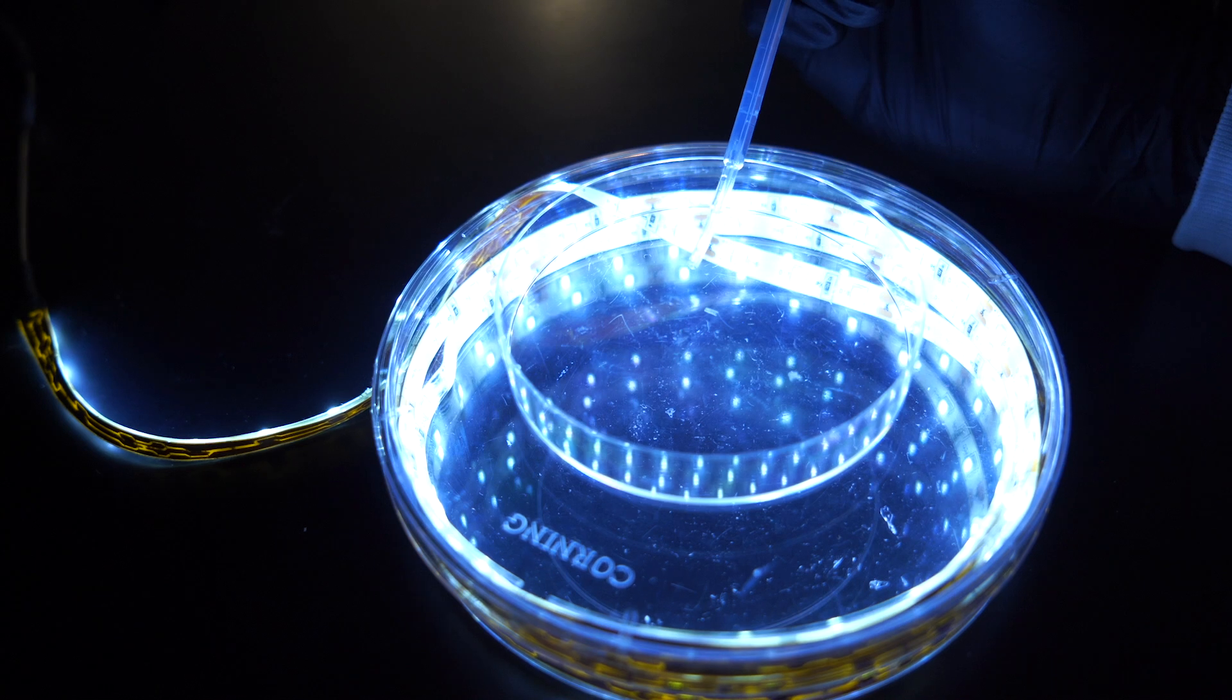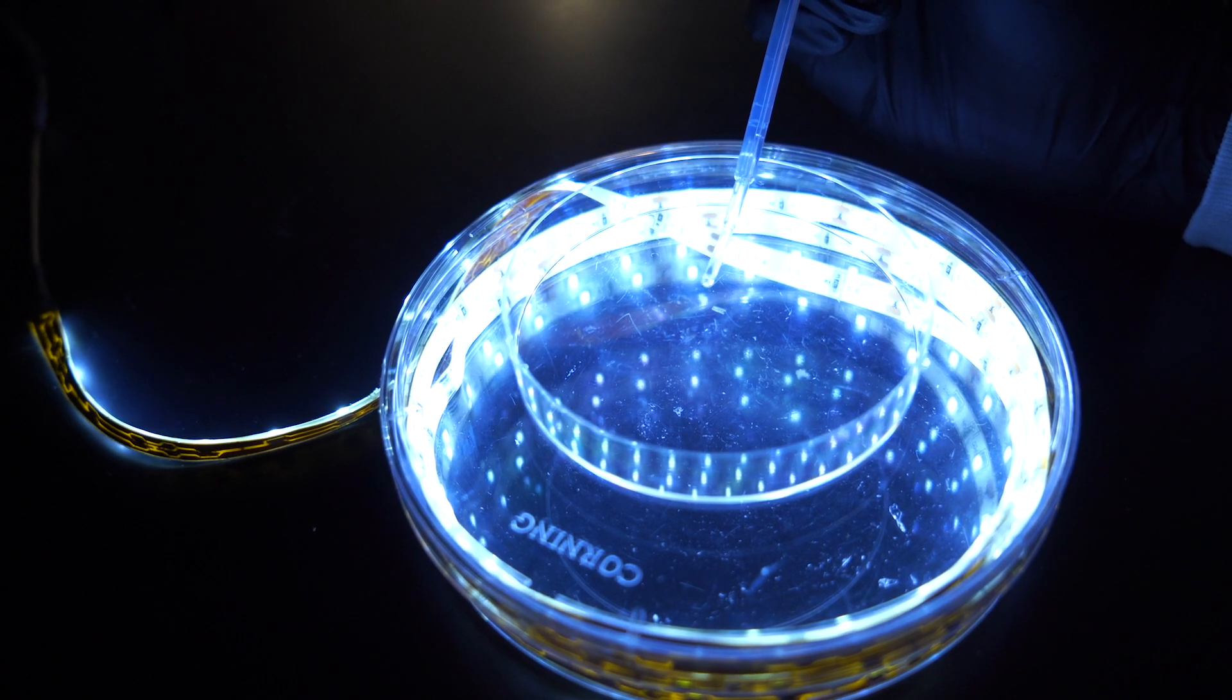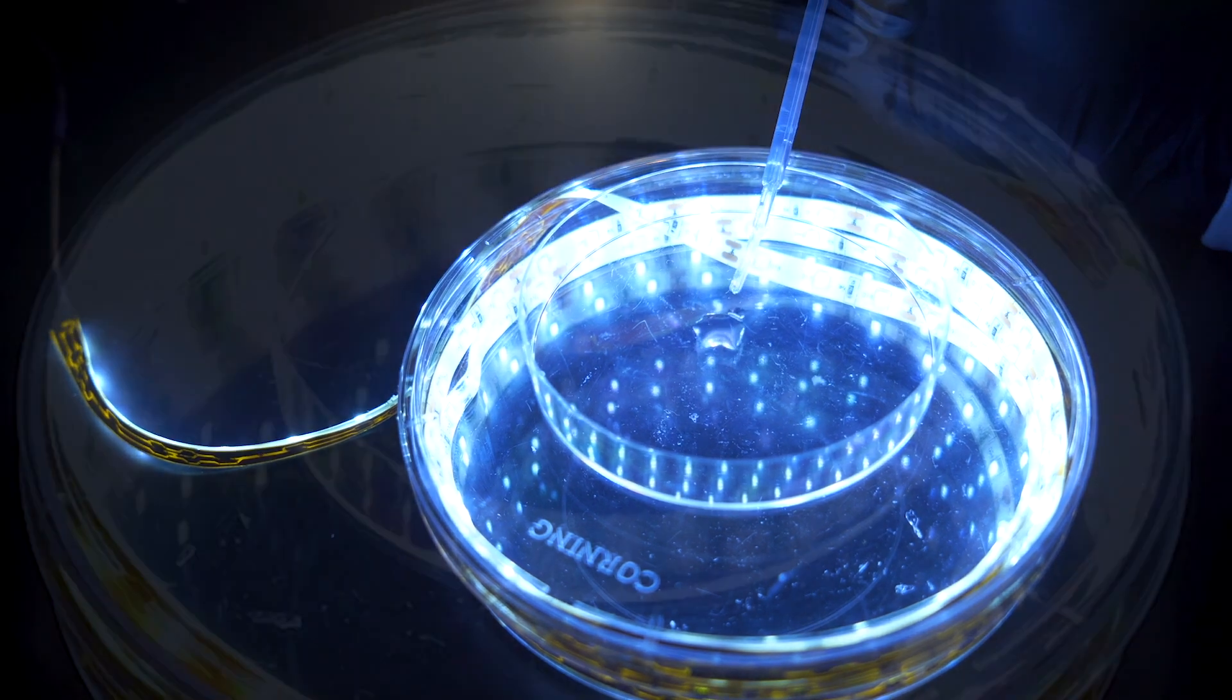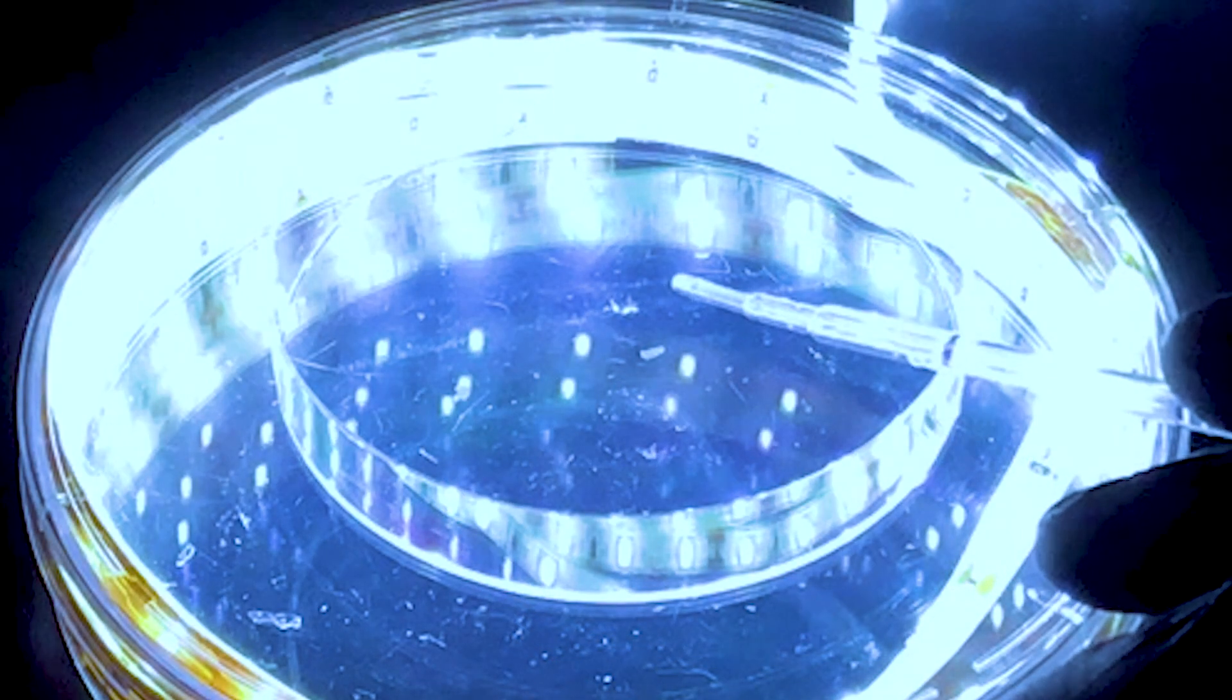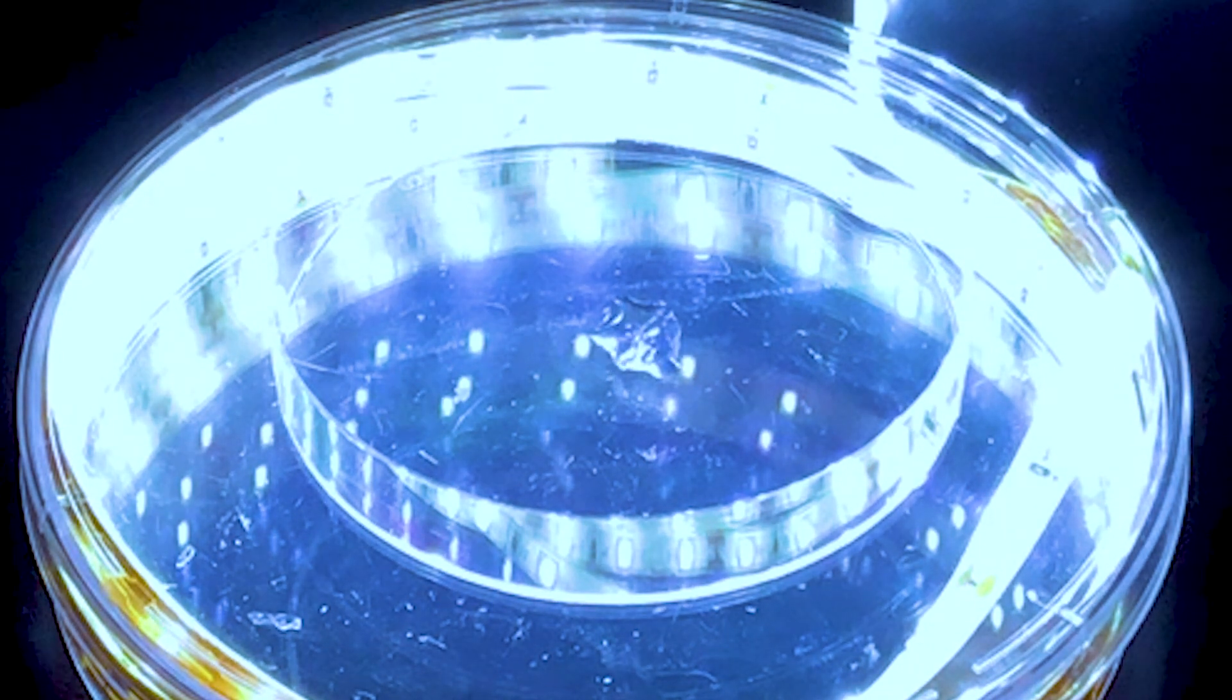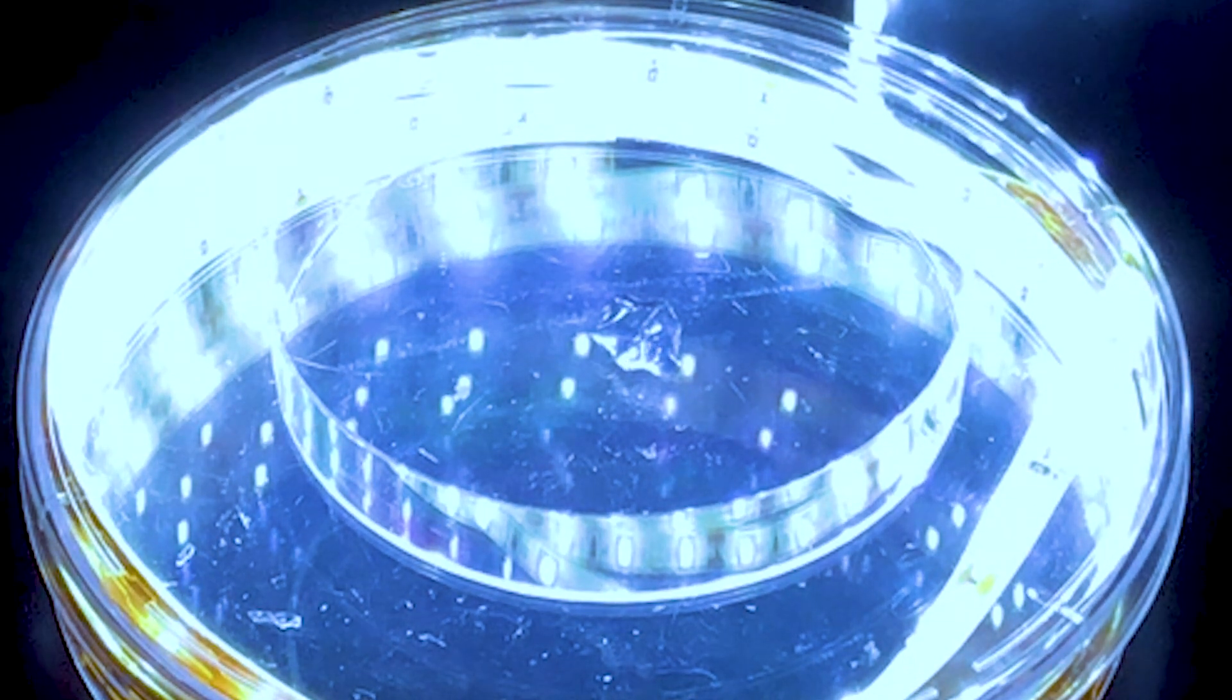Expansion microscopy is an emerging imaging technique that can allow you to see very fine details of biological specimens. Basically, you take the biological specimens and infuse it with some chemicals, just like baby diaper materials, and then you add pure water on these chemicals and then it will enlarge a hundred times in size along with the tissues.